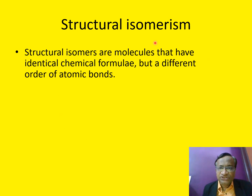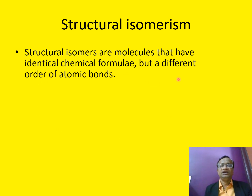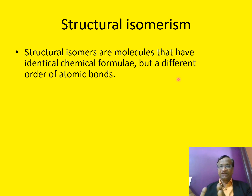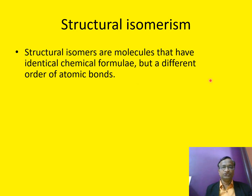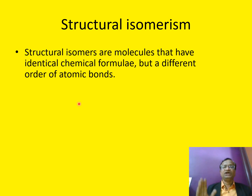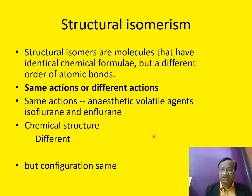Structural isomers are molecules that have identical chemical formulae but a different order of atomic bonds. The formula is the same — for example C6H6 or something like that — but here the F is here, there the H is there. That is what a structural isomer is: identical chemical formulae but a different order of atomic bonds. They may have the same actions or different actions.